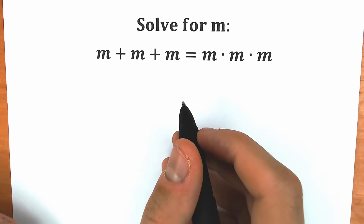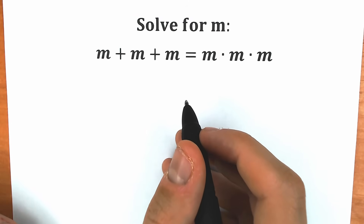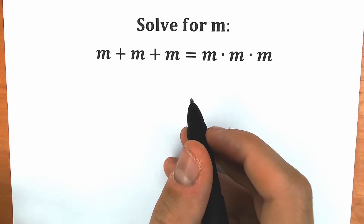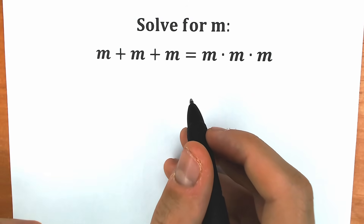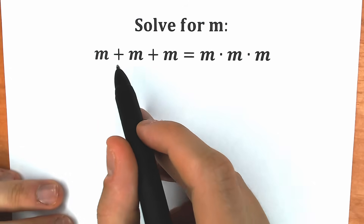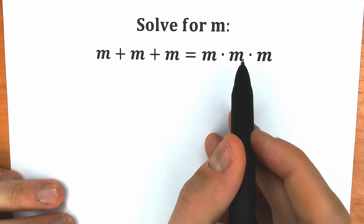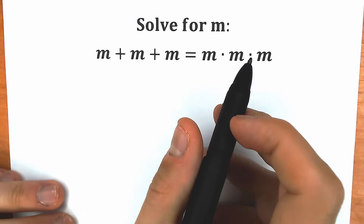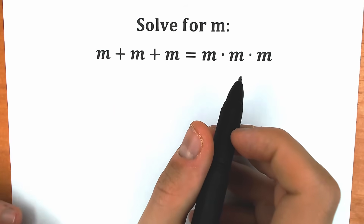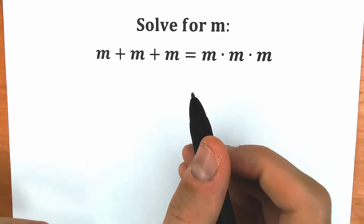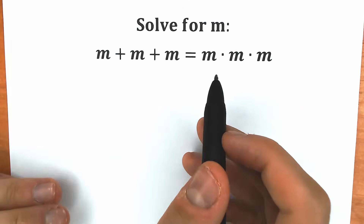Hello everyone! Welcome back to my channel Higher Mathematics. Today we have a very interesting and tricky question. We have m plus m plus m equal to m times m times m. And a lot of students might be saying, 'Hey mister, this is a very easy question!'